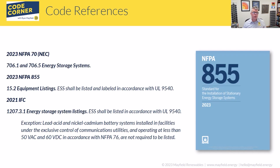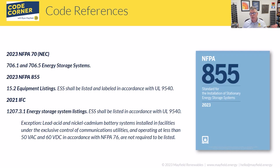Where it does show up with force is in the 2023 NFPA 855 — the standard for installation of stationary energy storage systems — in sections 15.2 and chapter nine. Chapter 15 deals with residential energy storage systems, while chapters four through nine deal with commercial and industrial systems. Both reference that the ESS shall be listed and labeled in accordance with UL 9540. The International Fire Code section 1207 has the same type of language — you shall have a listed ESS.